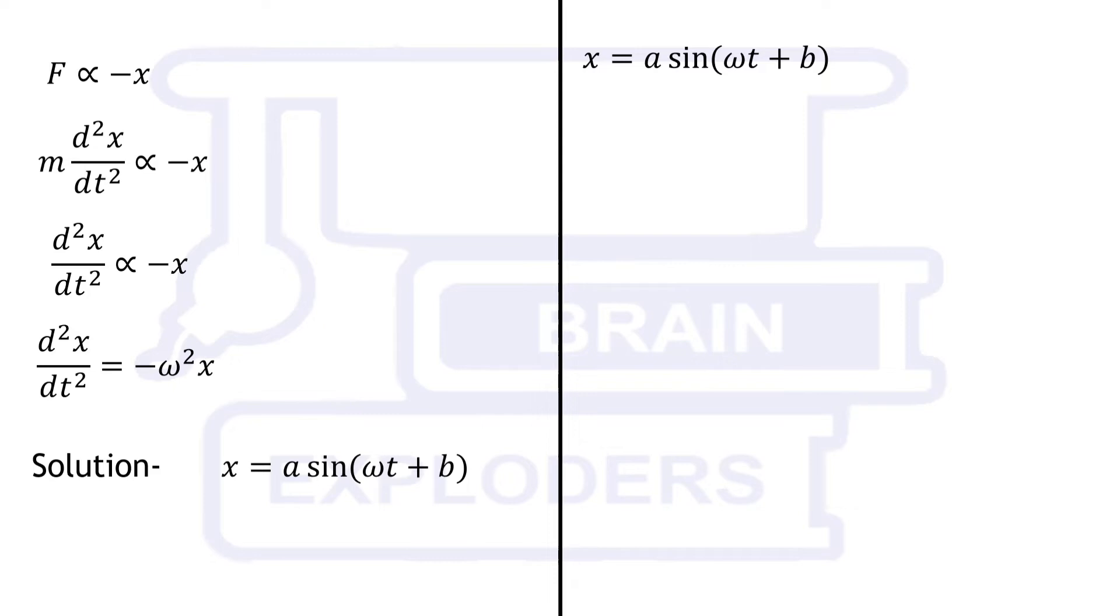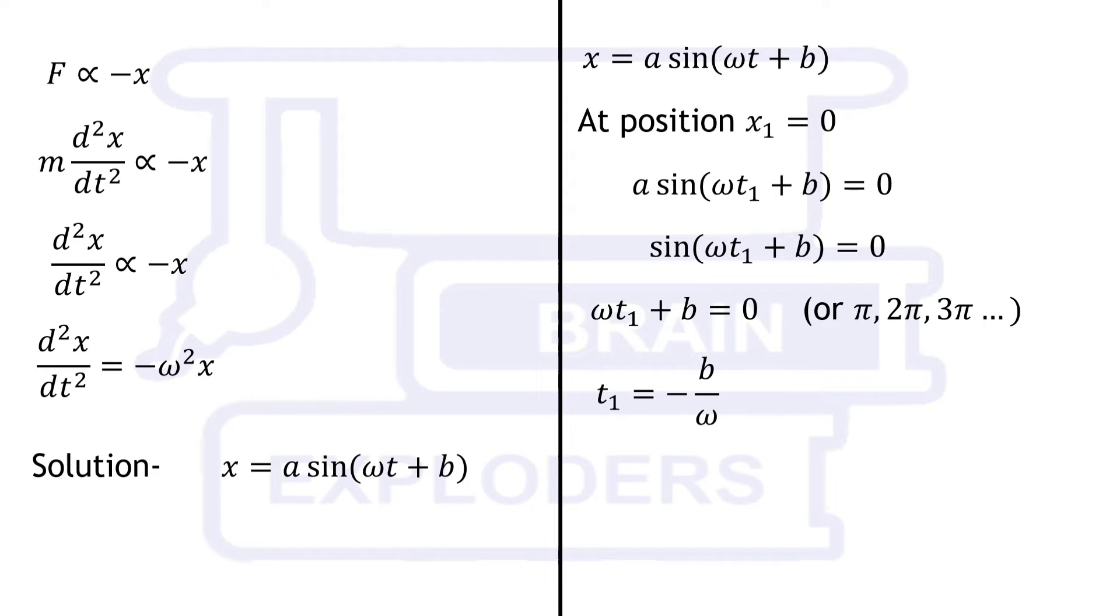At its mean position or when x equals 0, t1 is equal to minus b by omega. Other possible values of omega t plus b can give us other timings when the object is at its mean position.